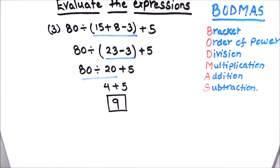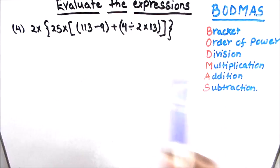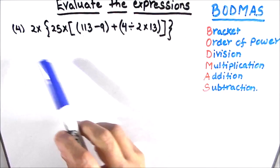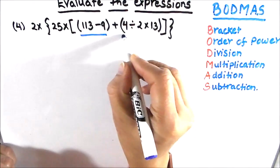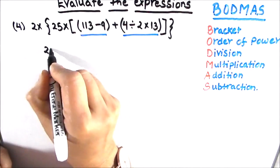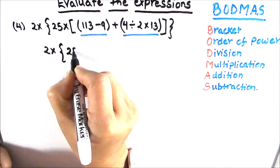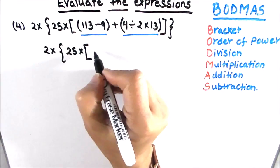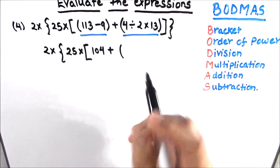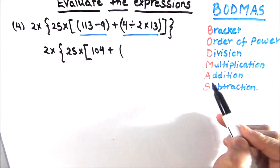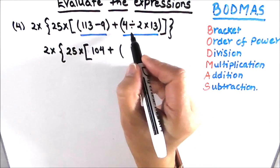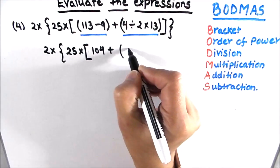Let's move on to our next example with more than six operations. This expression has all BODMAS operations except order of power, since there are no exponents. With multiple nested brackets, we first solve the innermost bracket — the small bracket. So we get 2 times 25 times big bracket open, and inside: 113 minus 9 is 104. Inside the small bracket we have division and multiplication, so we go left to right. 4 divided by 2 is 2, then 2 times 13 is 26.